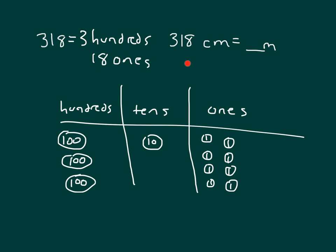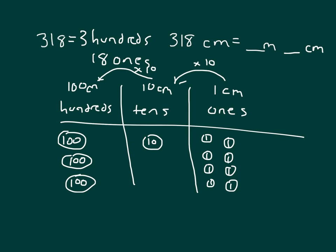This problem is very similar: I'm looking at 318 centimeters and expressing it as meters and centimeters. If one centimeter times ten equals ten centimeters, and times ten again equals 100 centimeters — that is also equal to one meter. So each hundred in the chart equals one meter: one meter, two meters, three meters.